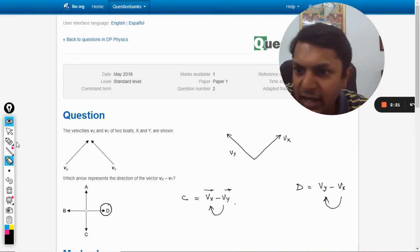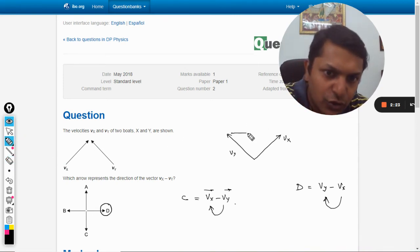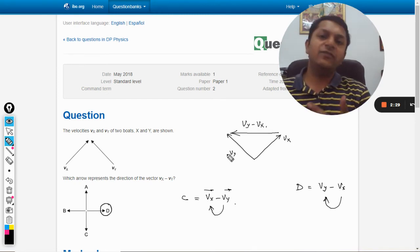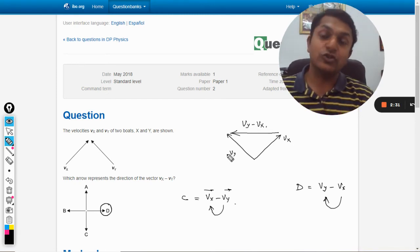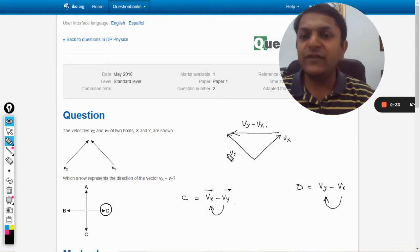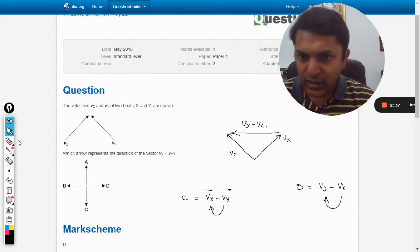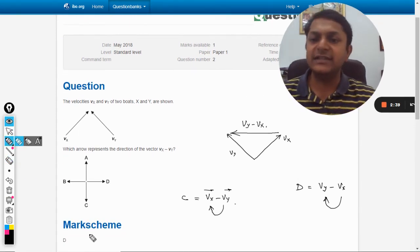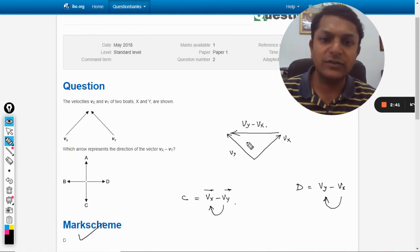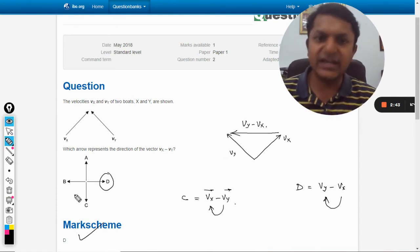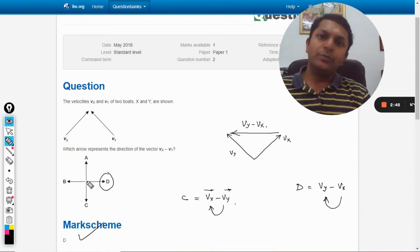So I have to rub this thing from x to y, it will be like this. So this will be vy minus vx. So in that case it will be b, but now the answer should be d. Let us verify our answer from the mark scheme. And yes, the answer is d. So answer is d, this direction.